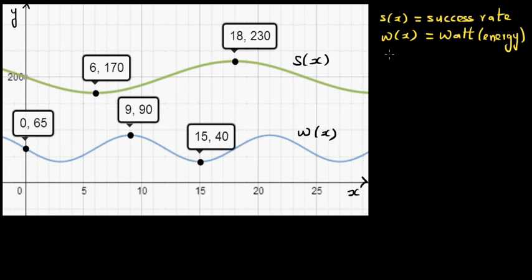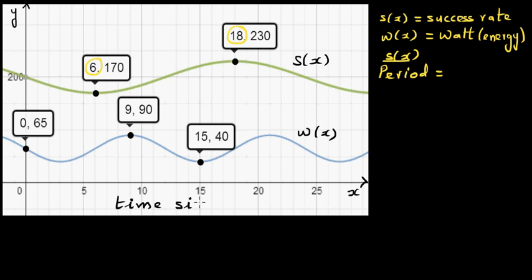For S of x, let's first look at the period. You know half the period from the maximum and minimum — they are starting at 6 a.m. and this is 6 p.m. This is time since midnight, so 6 stands for 6 a.m. and this is 6 p.m. Half a cycle is 12 hours, so one full period is 24 hours.